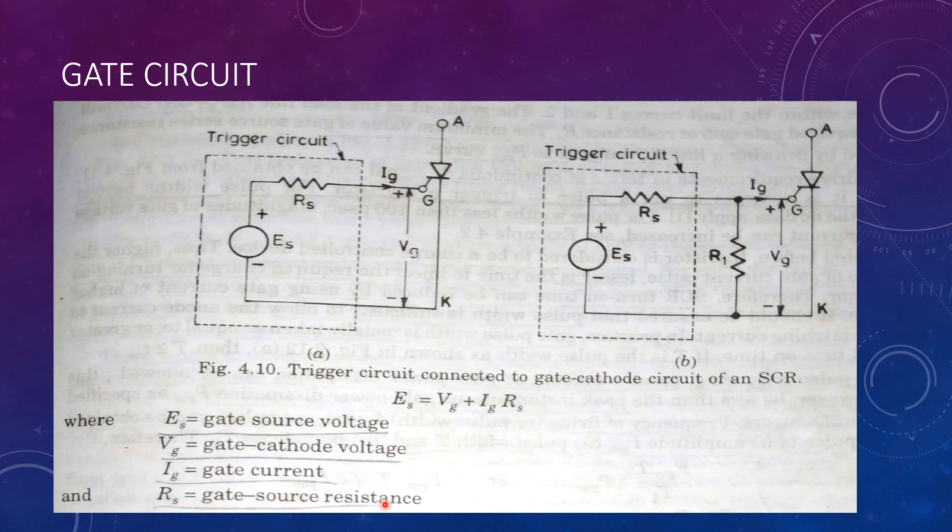RS is the gate to source resistance, VG is the gate to cathode voltage and IG is the gate current.